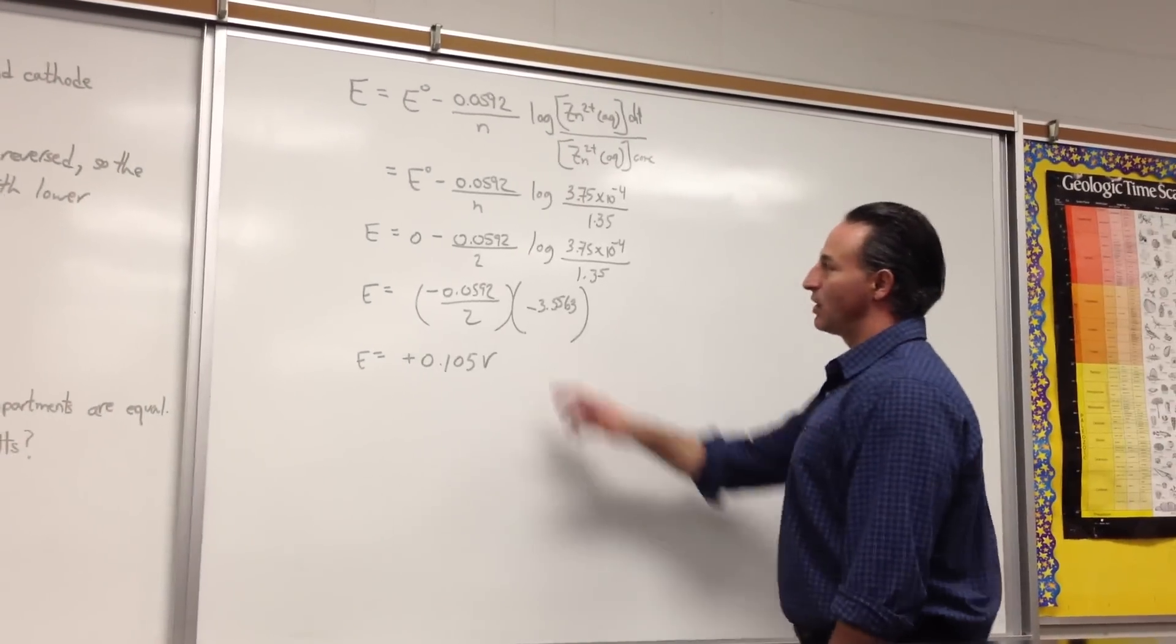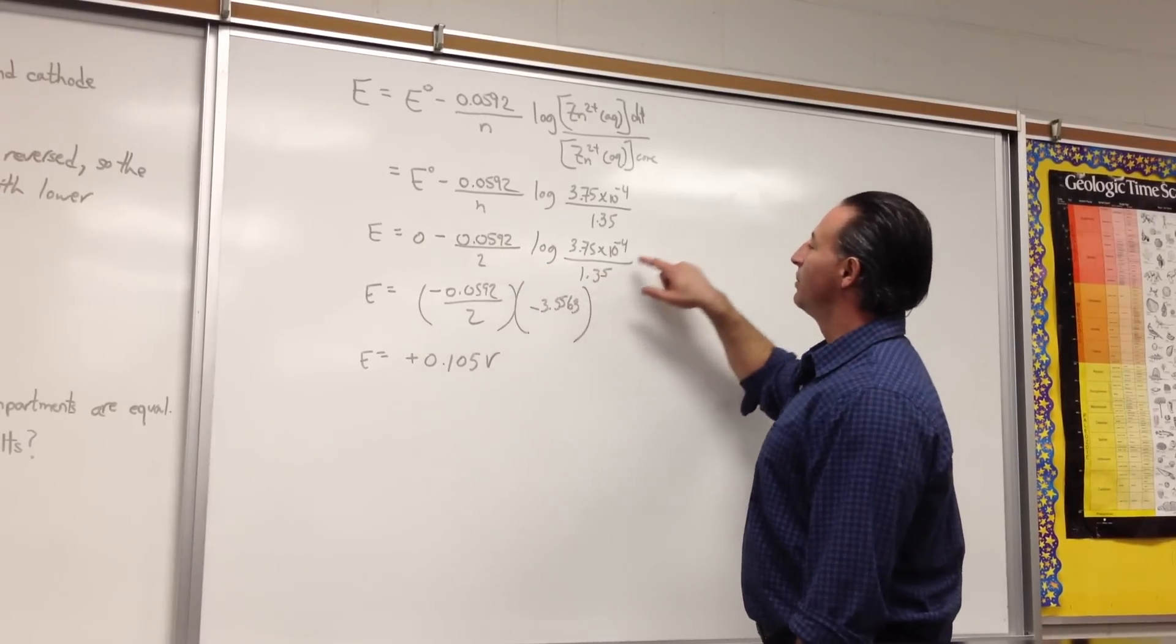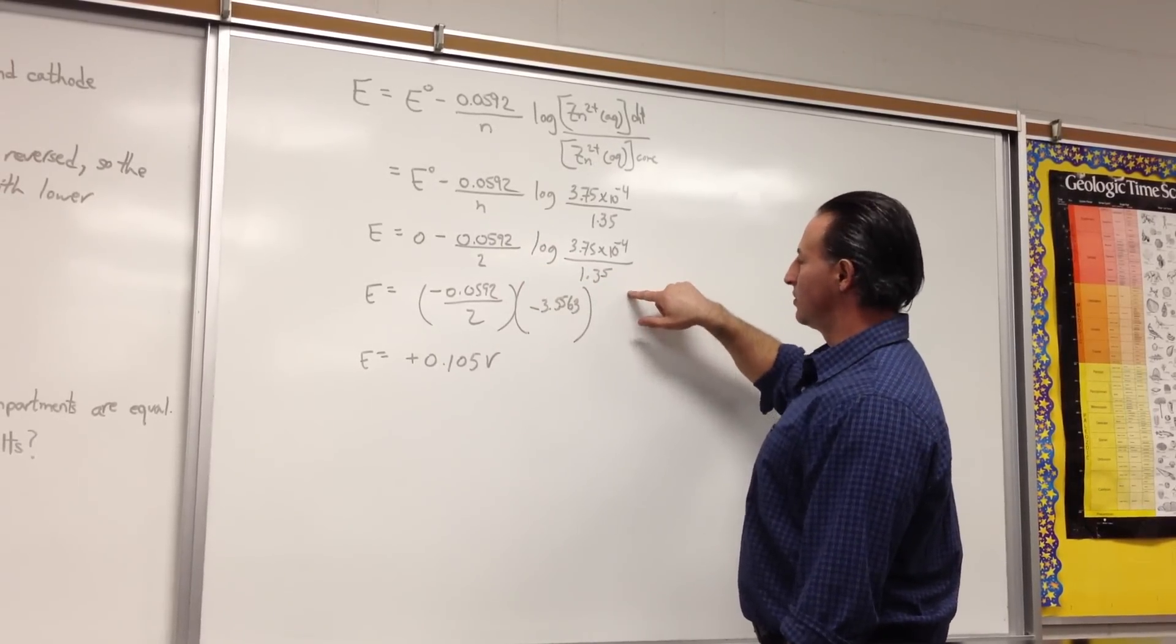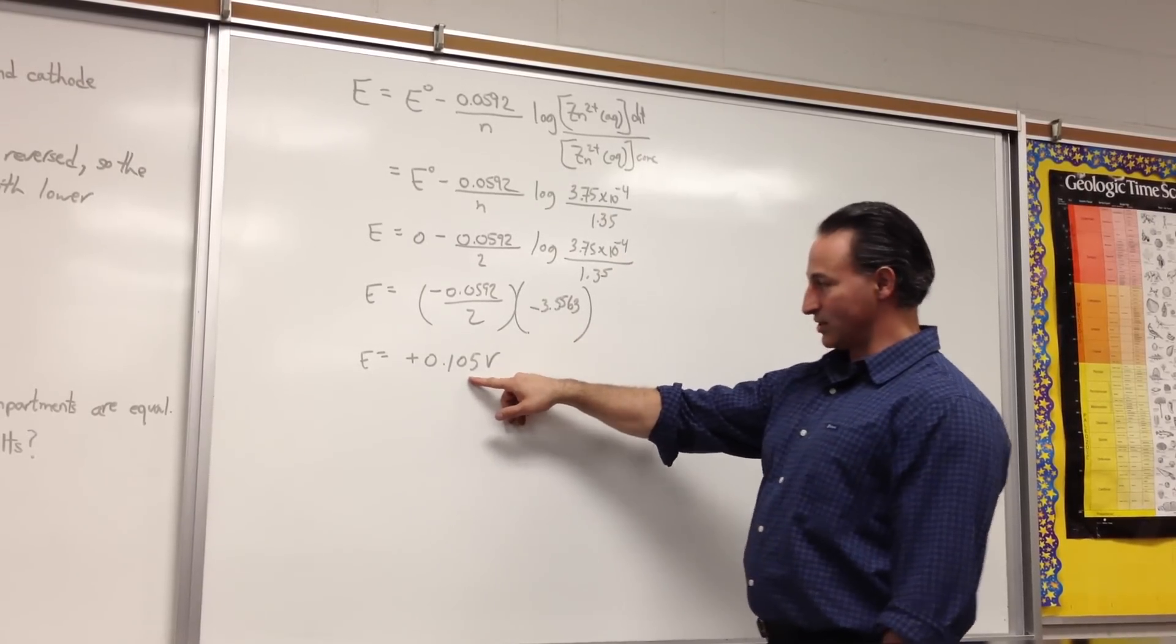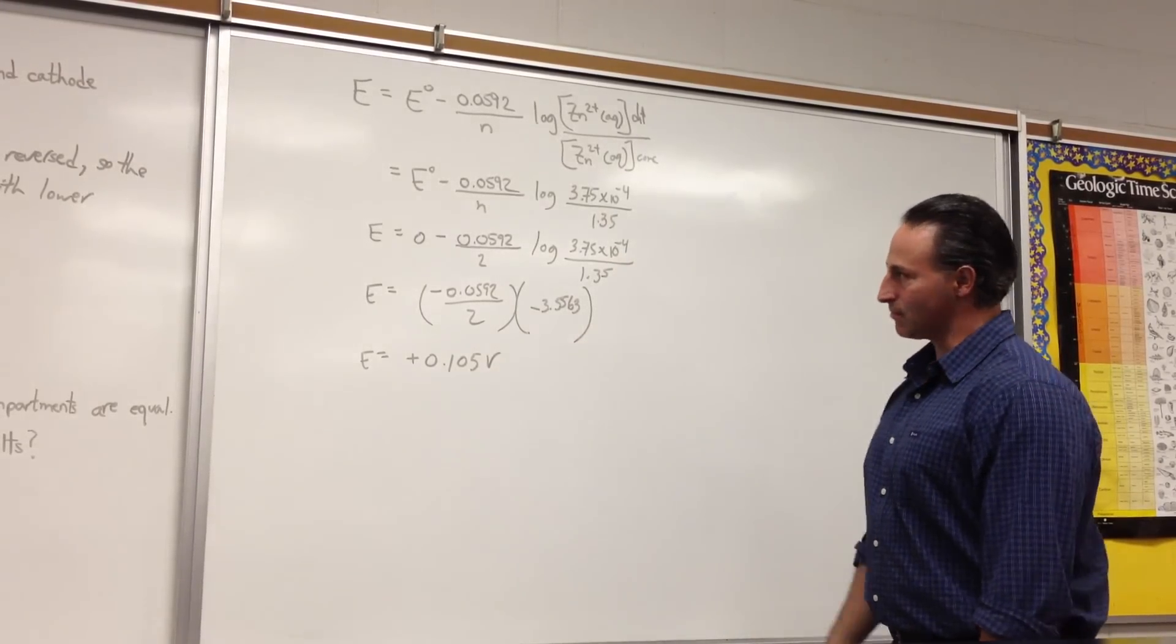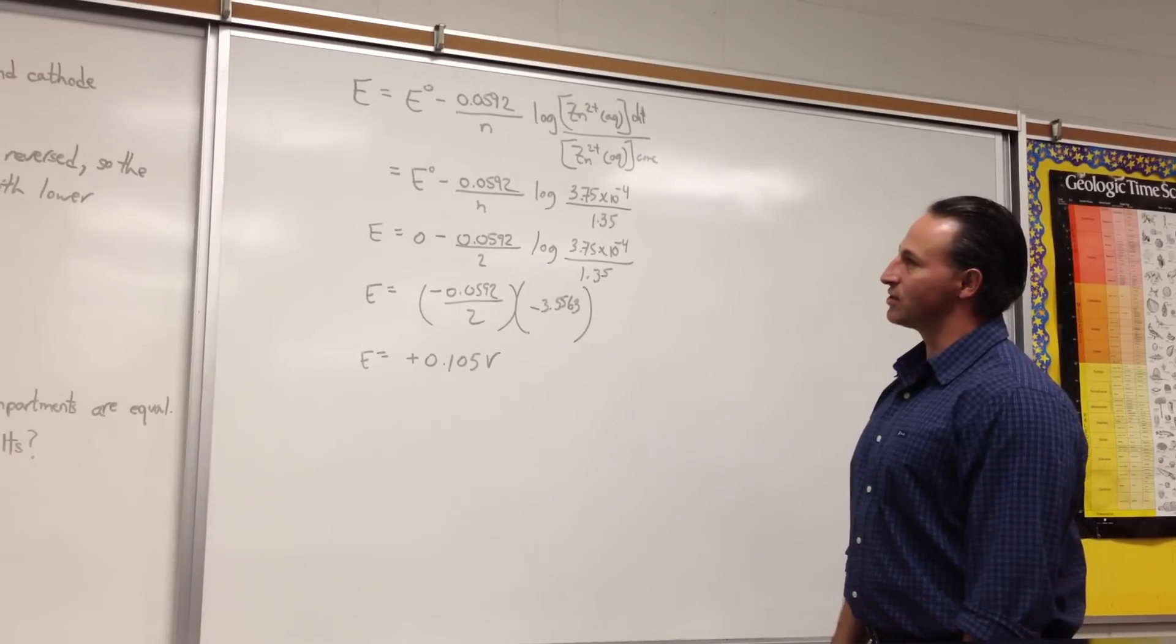Two electrons are transferred, that's where the n becomes 2. And we take the log of the two concentrations, and we see that it actually generates a voltage of 0.105. So, this is an example of a concentration cell.